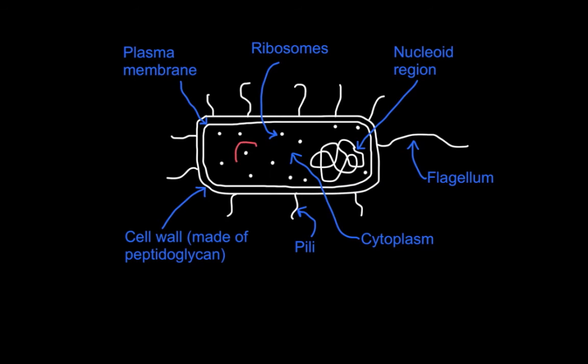With regards to compartmentalization, prokaryotes are different from eukaryotes because none of the organelles such as the ribosomes and nucleoid region found within the cytoplasm are contained within a membrane.